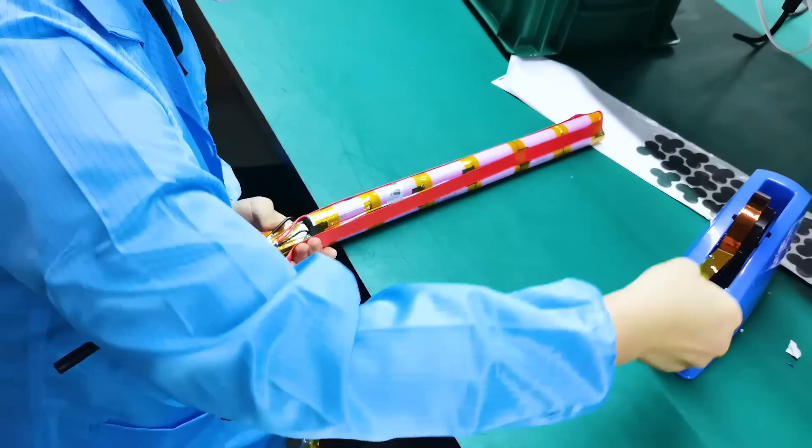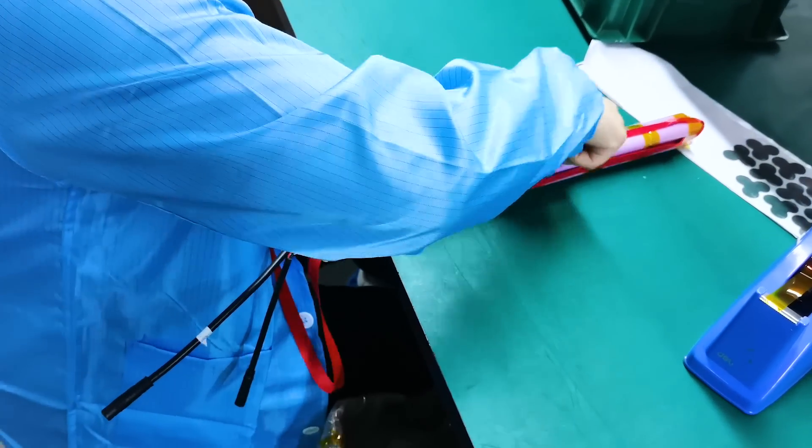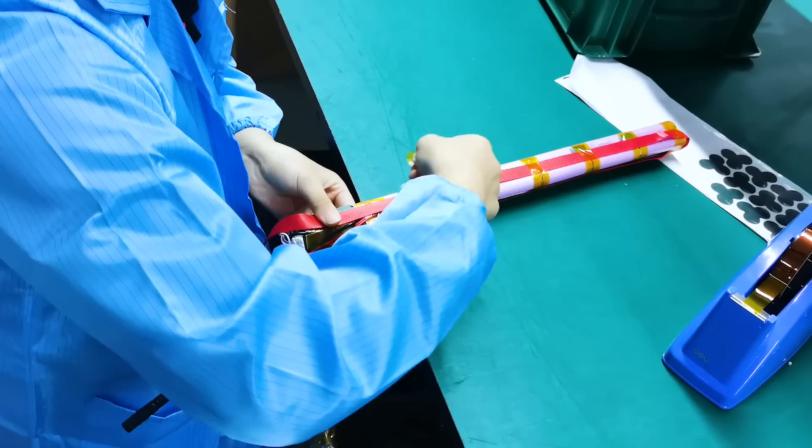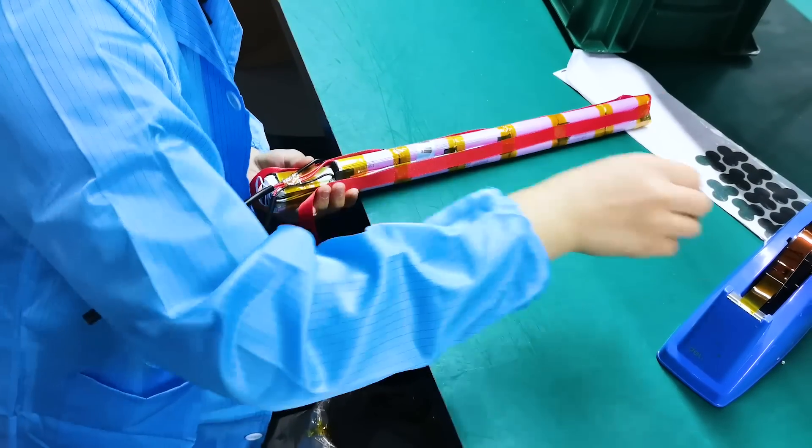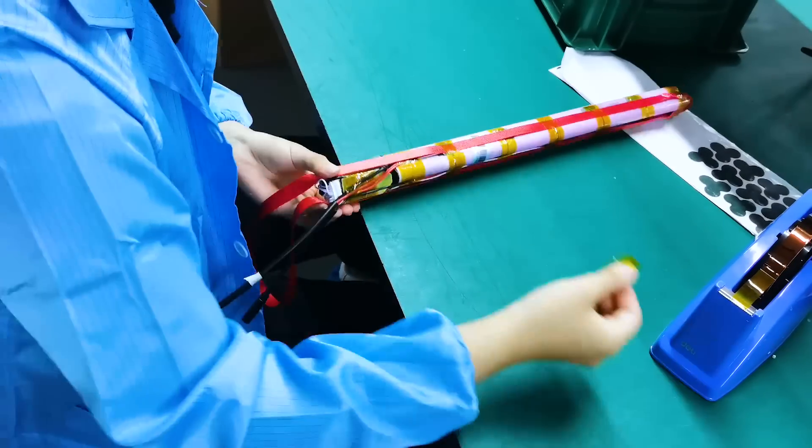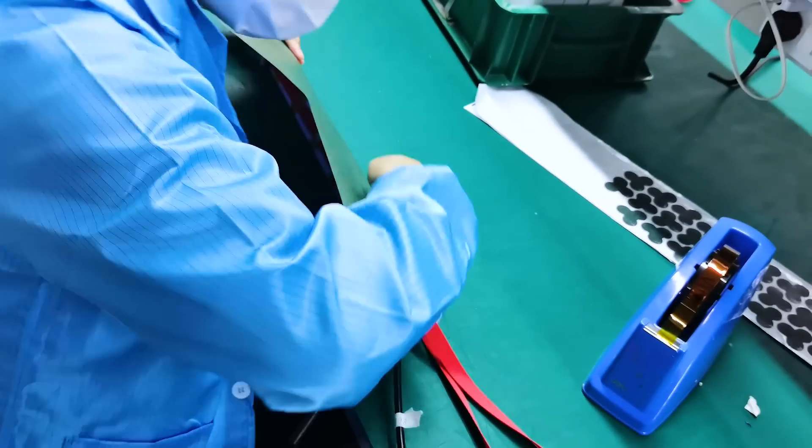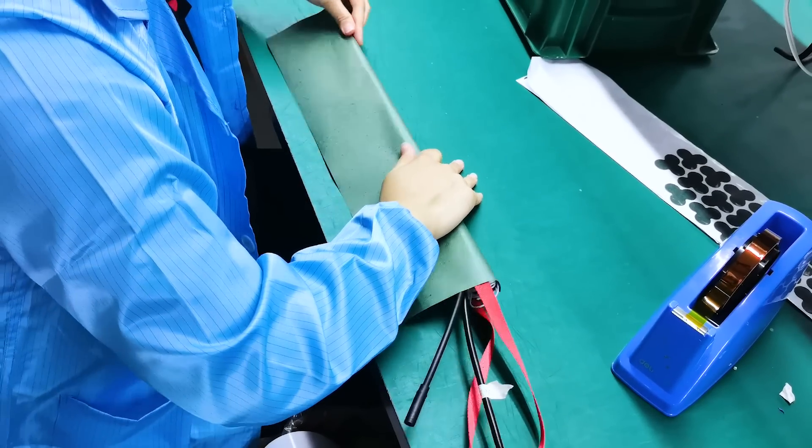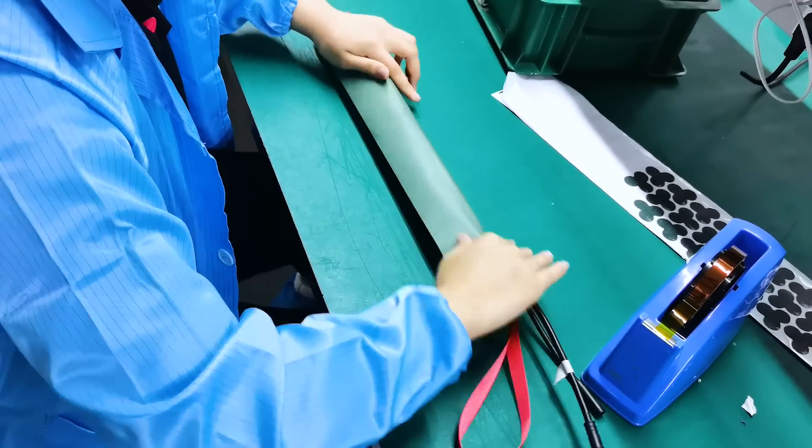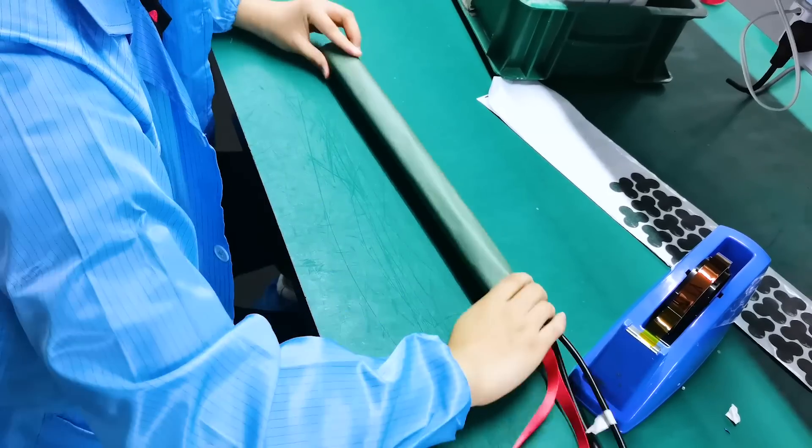This strap goes all the way around to the bottom of the battery. When you pull on it, that red strap is pulling everything out. If you ever need to remove it, pull the red cable and it will come out of the frame. Very strong nylon strapping there.